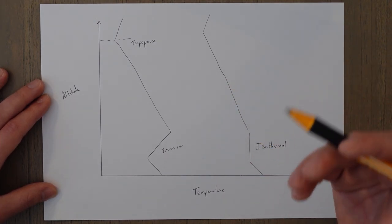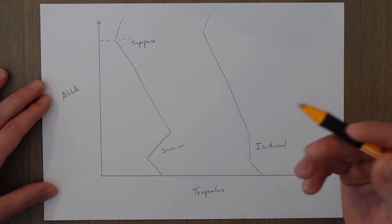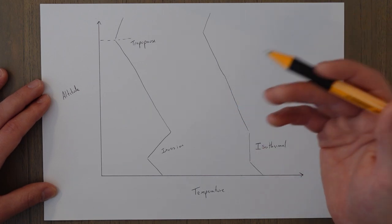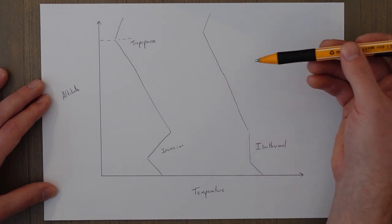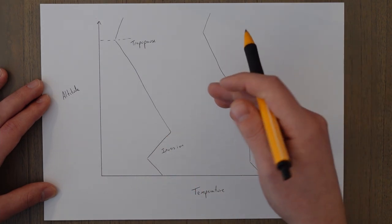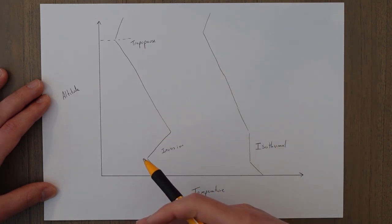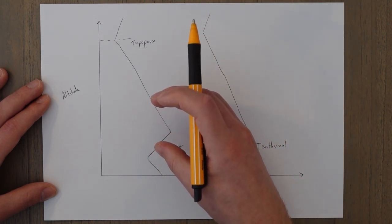You also get something called a subsidence inversion which is formed when air descends due to winds or something forcing it down like a mountain. It then starts to warm up as it descends down. This warm air then falls on top of surface air. This surface air can't get pushed out of the way because it's got the ground in its way so the warmer air just ends up resting on top of the colder air.